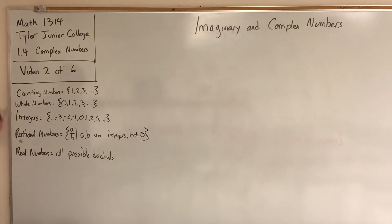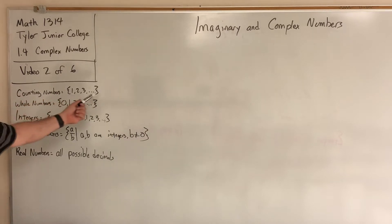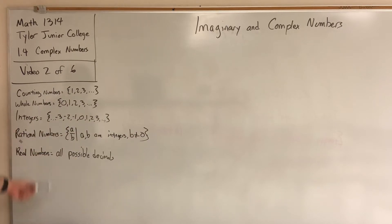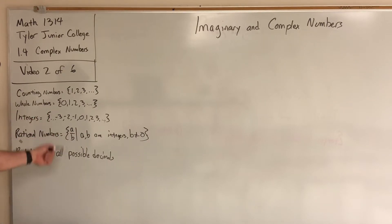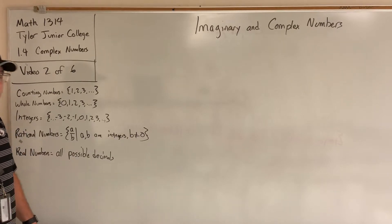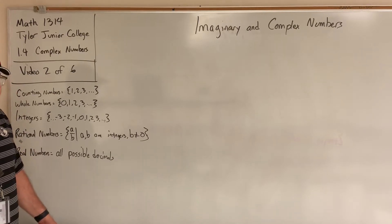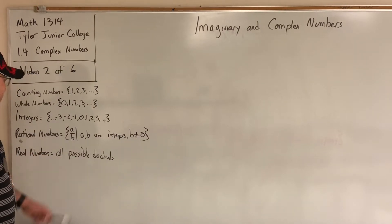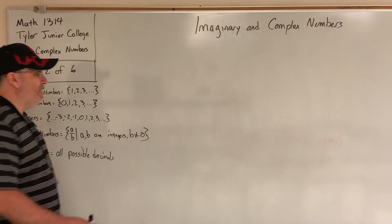I've summarized the different sets of numbers reviewed in the first video: counting numbers 1, 2, 3 and so on; whole numbers 0, 1, 2, 3; integers — whole numbers joined with the negative whole numbers going back to negative infinity; rational numbers — all ratios of integers provided the denominator is not zero, which can also be described as all decimals that either terminate or repeat. Pick up all the other decimals that neither terminate nor repeat — the irrational numbers — and we get the real numbers.